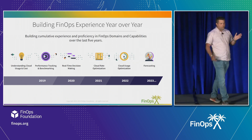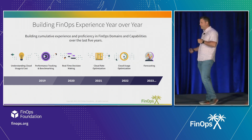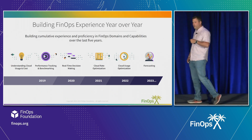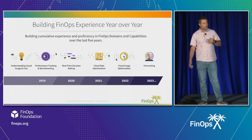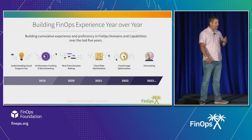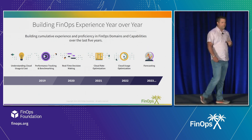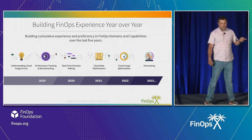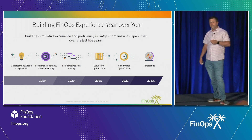You've seen these FinOps domains. We started off with understanding cloud cost and usage — you start taking a look at CUR and ask what interesting details we can gather from this. Once you understand what your usage patterns are, you start saying, how do we measure that? And that's where performance tracking and benchmarking really become important.